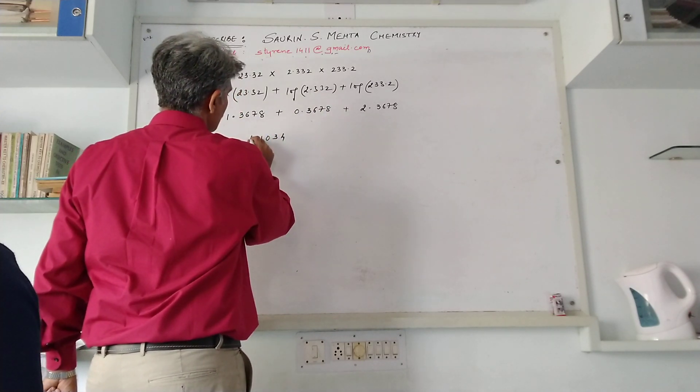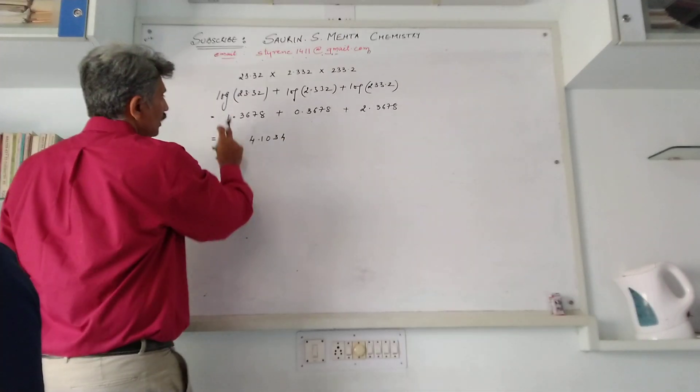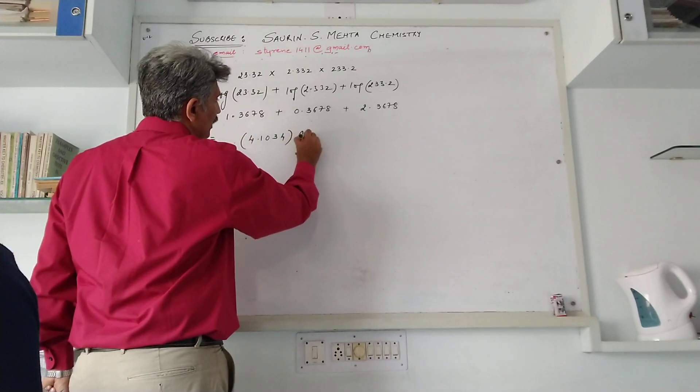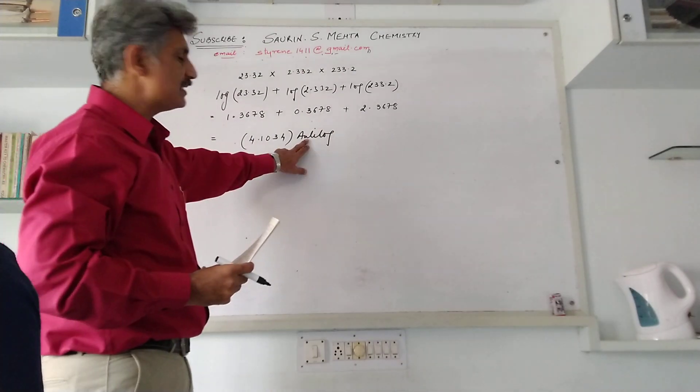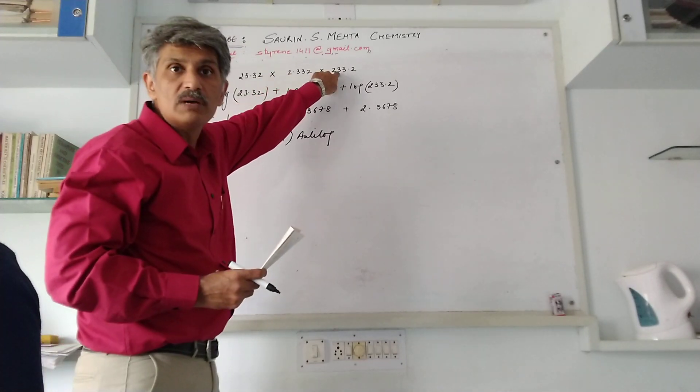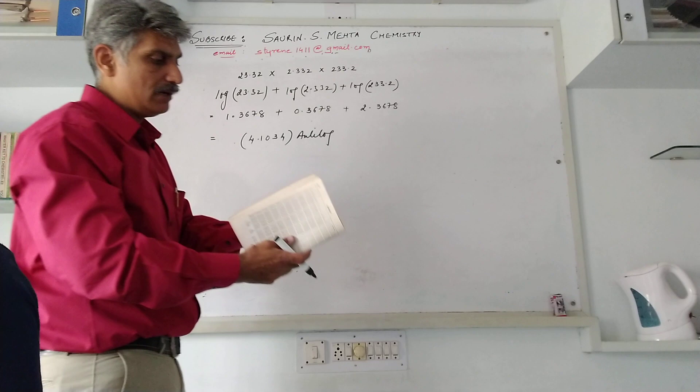Now I'll determine anti-log of this value. As I determine anti-log of this value, I'll get the actual answer for multiplication of all three terms. For that we'll move on to the anti-log table.